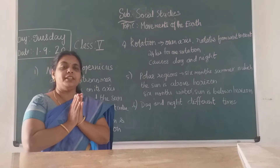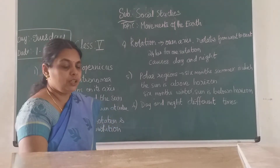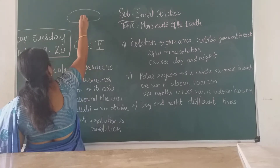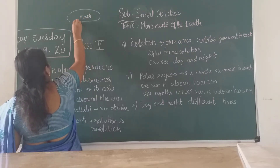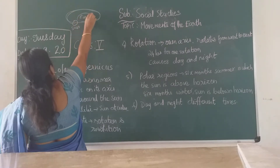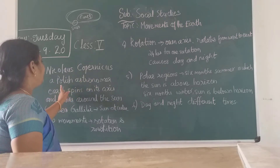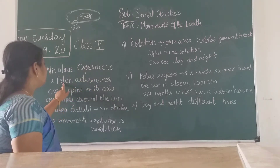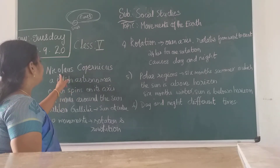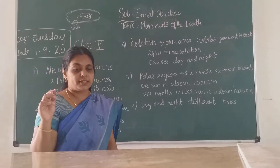In ancient days, people believed that the earth was at the center of the universe. They thought the sun was revolving around the earth. But a scientist named Nicholas Kopernikus, a Polish astronomer, proved that the earth is rotating around the sun.